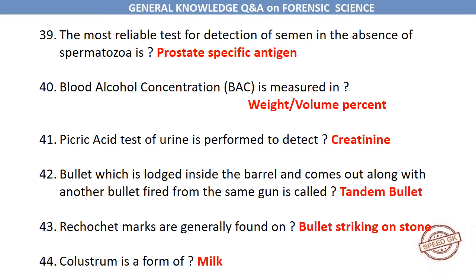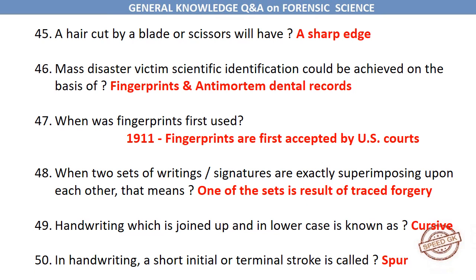Blood alcohol concentration is measured in weight per volume percent. Picric acid test of urine is performed to detect creatinine. A bullet which is lodged inside the barrel and comes out along with another bullet fired from the same gun is called a tandem bullet. Ricochet marks are generally found on a bullet striking on stone. Colostrum is a form of milk. A hair cut by a blade or scissors will have a sharp edge.